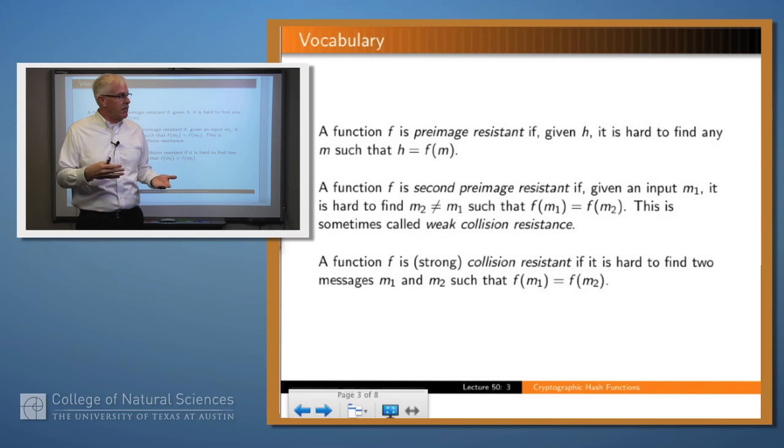We say that the function is second pre-image resistant, if we already have a message and its hash value, and it's difficult to find another message which hashes to the same value. And then we say a function is strong collision resistant, if it's hard to find any two values which hash to the same value.